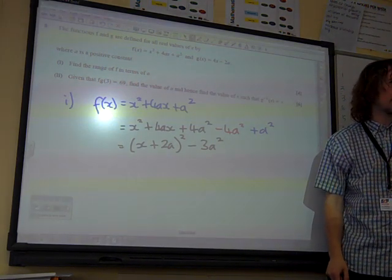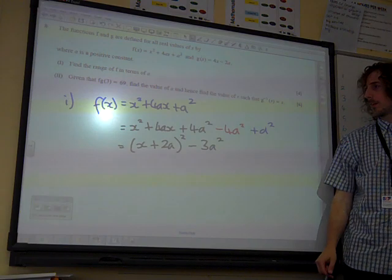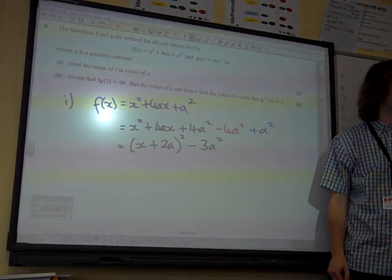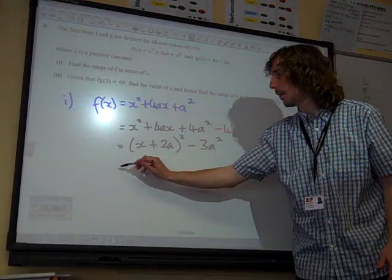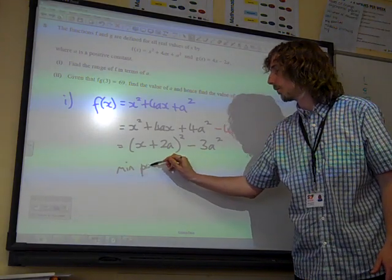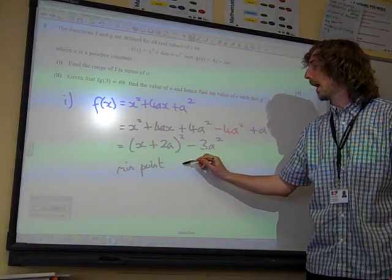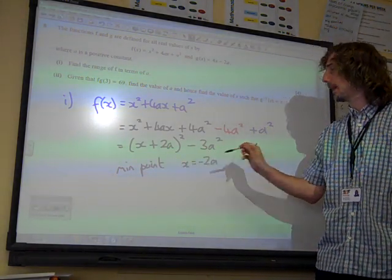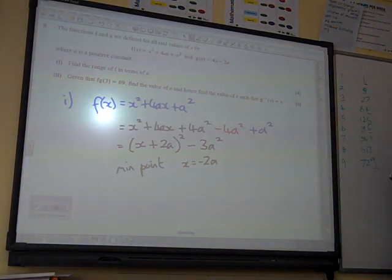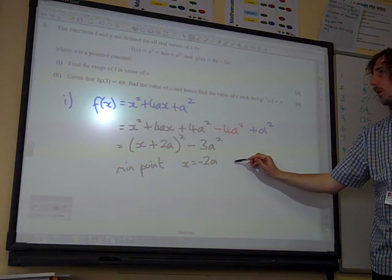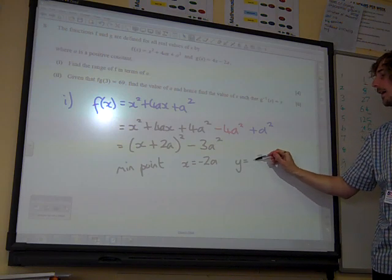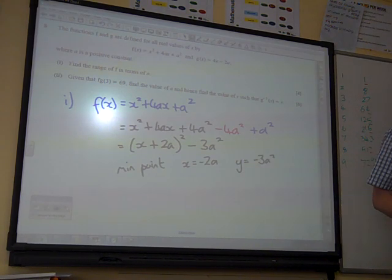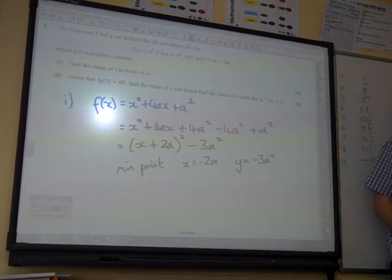What does that tell us about the quadratic? Well, it tells us, because it's a positive coefficient of x squared, it tells us that the minimum point is at x equals minus 2a, and the y value would be minus 3a squared.